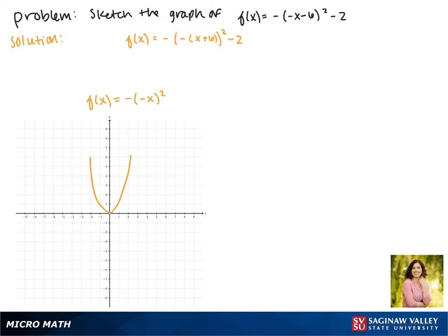Now the negative outside of the square tells us to reflect it across the x-axis. Now we finish the reflections, we'll move on to the translations.